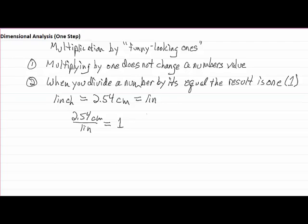And that's exact. It has no units. So it's just plain 1. Also, 1 inch divided by 2.54 centimeters is also equal to 1. Both of those things happen to be true. A number divided by its equal is 1. So it works both ways. Now this right here or this right here are both funny looking ones, but they're 1.